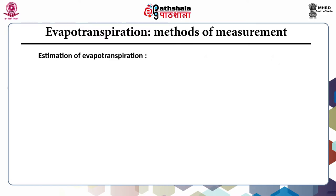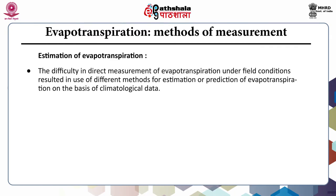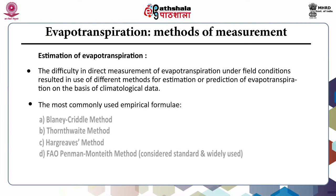The difficulty in direct measurement of evapotranspiration under field conditions has resulted in the use of different methods for estimation or prediction of evapotranspiration on the basis of climatological data. The most commonly used empirical formulas are the Blaney-Criddle method, Thornthwaite method, Hargreaves method, and FAO Penman-Monteith method. The FAO Penman-Monteith method is considered the standard and widely used method.